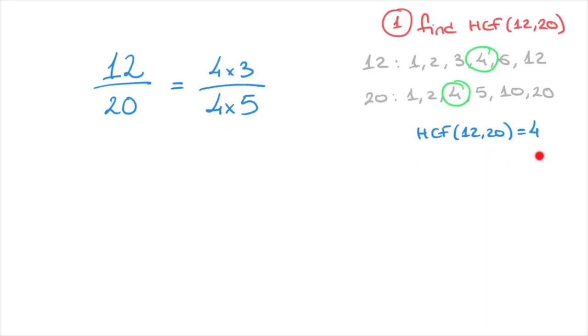In other words, once we know the highest common factor, we rewrite both the numerator and the denominator as a product of the highest common factor 4 and whichever other factor is missing, which was 3 for the numerator and 5 for the denominator.